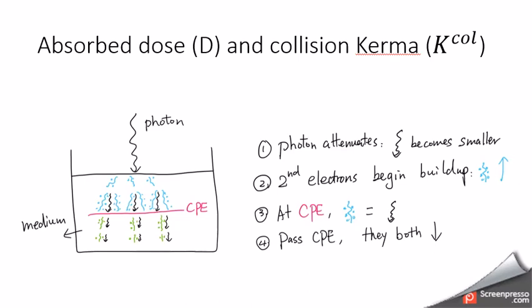In order to understand the difference between absorbed dose and collisional kerma, let's take a look at what happens when the incoming photon beam hits a medium, for example a bucket of water.